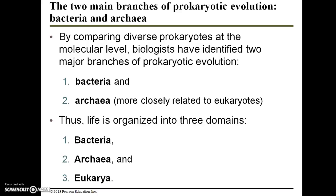There are two main branches of prokaryotic evolution: bacteria and archaea. By comparing diverse prokaryotes at the molecular level, biologists have identified these two major branches. Archaea are actually more closely related to eukaryotes than they are to bacteria. Life is organized into three domains — the most inclusive categories — which are bacteria, archaea, and eukarya. All organisms whose cells are eukaryotic are classified within the domain eukarya.